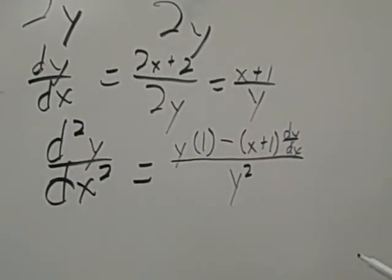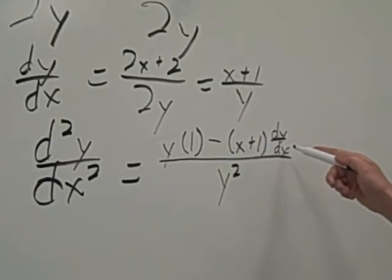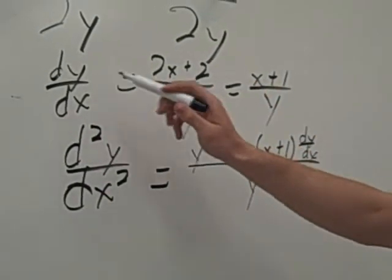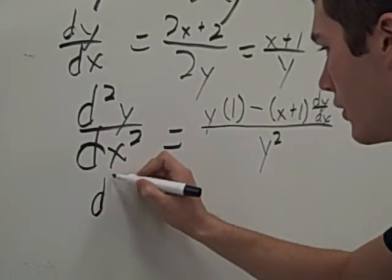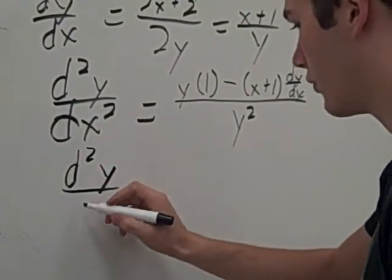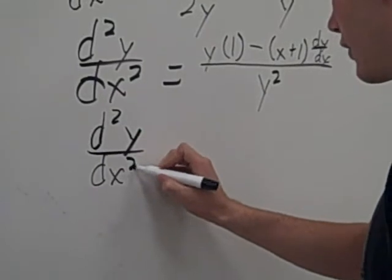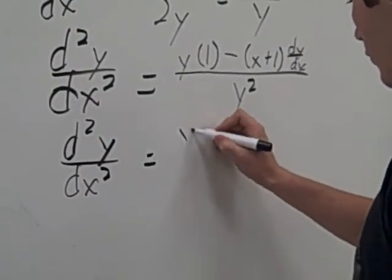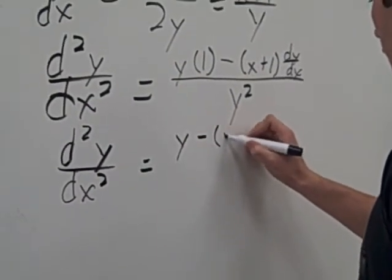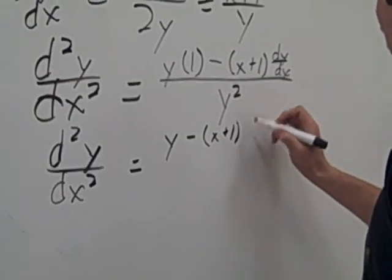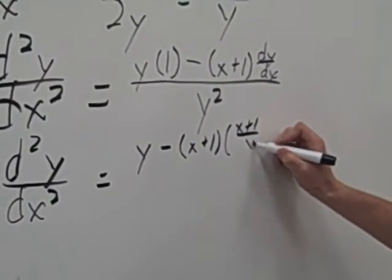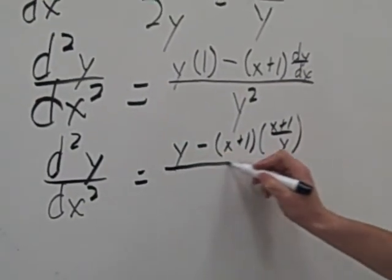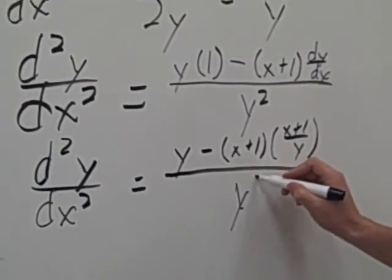Now, we have dy dx, which we found right here equals x plus 1 over y. So d squared y over dx squared equals y minus x plus 1 times x plus 1 over y all over y squared.